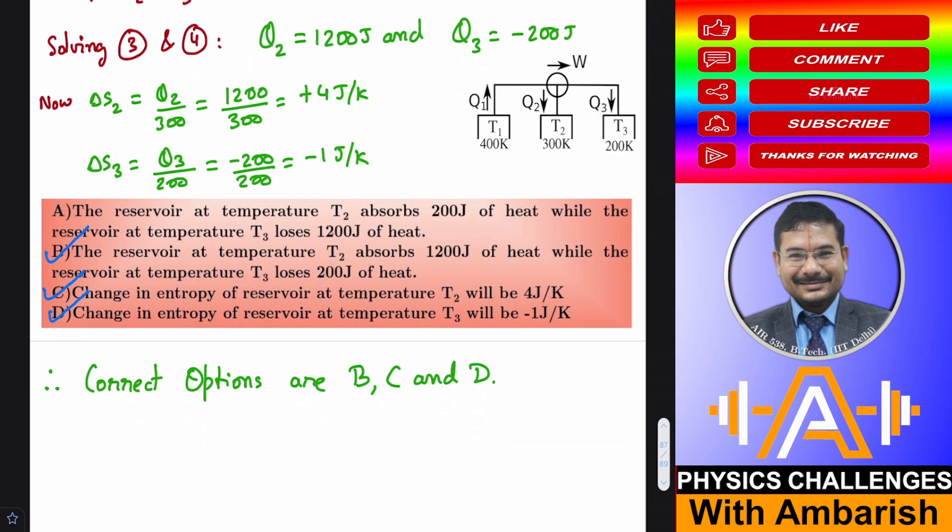And the third one. Third statement or rather last option. Change in entropy of reservoir at T3 will be minus 1 joule per Kelvin. So Q3 is minus 200 and temperature is 200. So you divide the two and you get minus 1 joule per Kelvin. So option D is also correct.